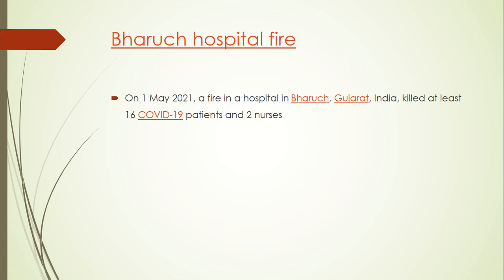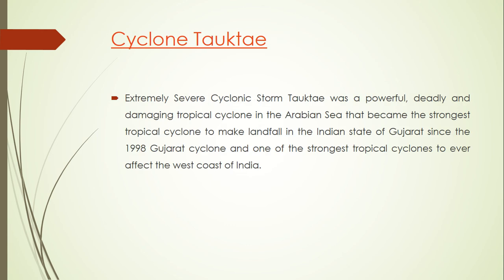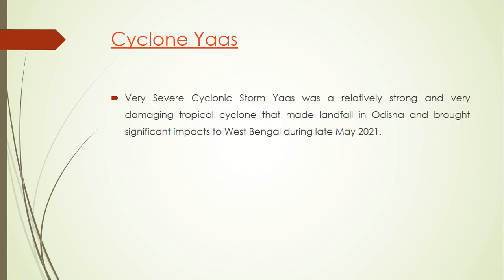The Bharuch hospital fire on 1st May killed 16 COVID-19 patients and two nurses. Cyclone Tauktae was an extremely severe cyclonic storm that became the strongest tropical cyclone to make landfall in Gujarat since the 1998 Gujarat cyclone and one of the strongest to ever affect India's west coast. Cyclone Yaas was a very severe cyclonic storm that made landfall in Odisha and brought significant impact to West Bengal during late May 2021.